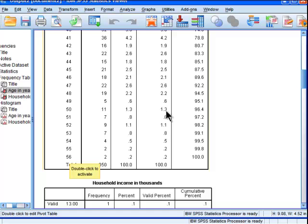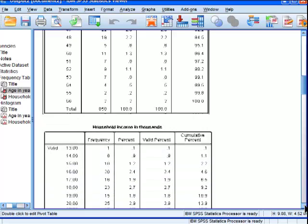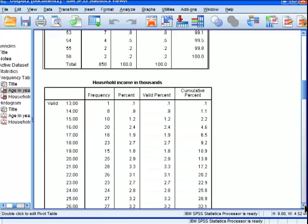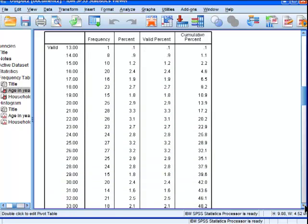And that 1.3% of the sample is 50 years old. That's 11 observations. Now, household income is the same frequency table, so it's the same interpretation.